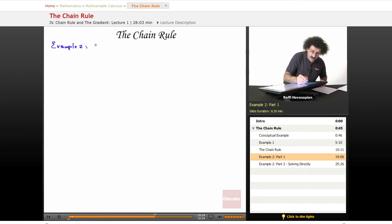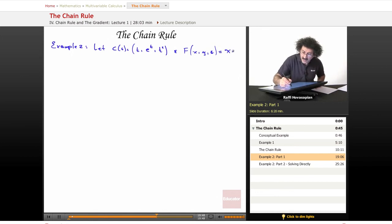Example two. Now, we will let our curve C(t) be (t, e^t, t^2). And we'll let our function f(x, y, z), so we're definitely talking about a curve in three space and a function of three variables, equal x·y^2·z.